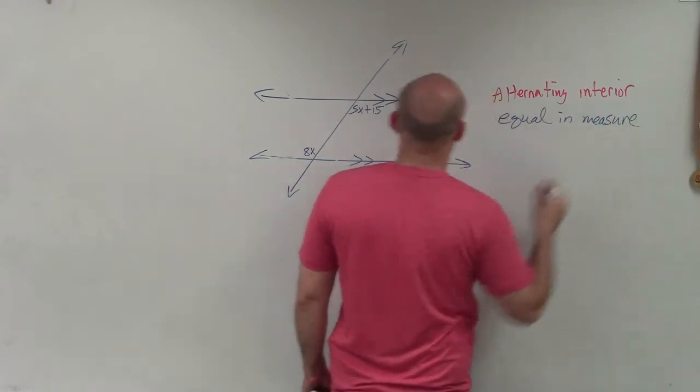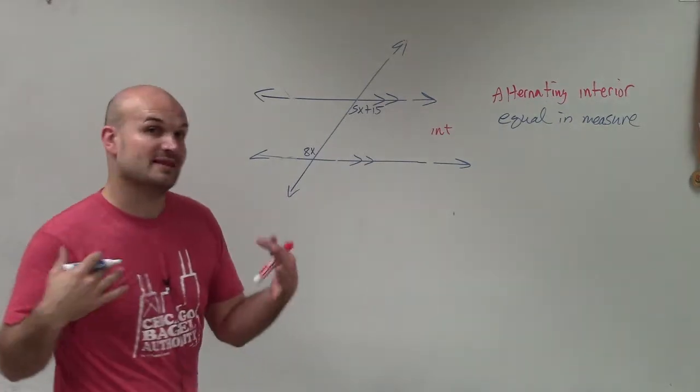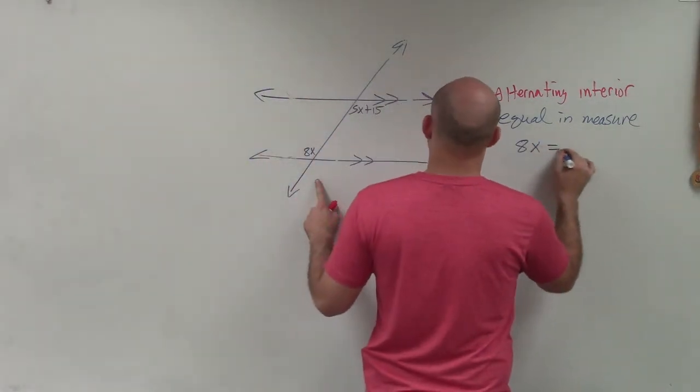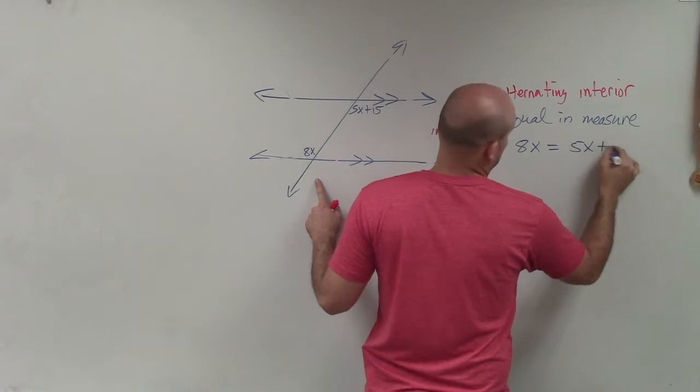So if I want to solve for x in this problem, what I need to do is set them equal to each other. So I can say 8x is equal to 5x plus 15.